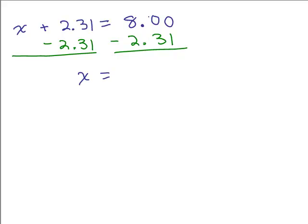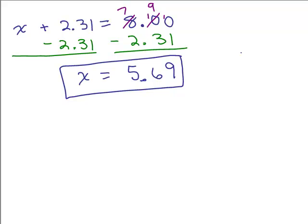Since most people do the borrowing method, I'm just going to go ahead and do it that way. 7 and then you put a 10 there and then you borrow that, 10 there. And so what do we get? 7 minus 2, you get 5, 6, 9. So we get x equals 5.69. So let's check it.